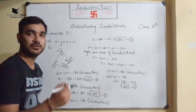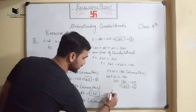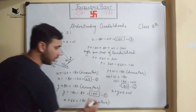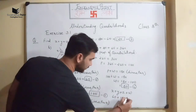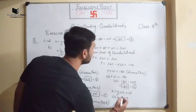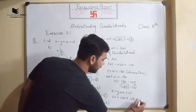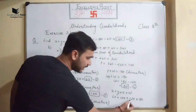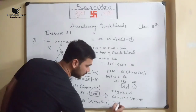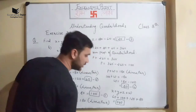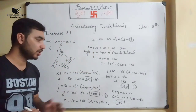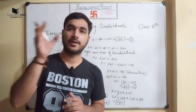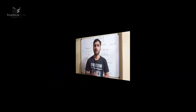Adding all equations: x + y + z + w = 60 + 100 + 120 + 80 = 360°. So the sum of exterior angles always equals 360°. This is the formula for the sum of exterior angles of any polygon.